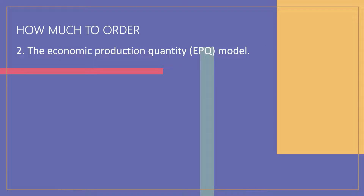Because the company makes the product itself, there are no ordering costs as such. Nonetheless, with every production run or batch there are setup costs — that is, the costs required to prepare the equipment for the job, such as cleaning, adjusting, and changing tools and fixtures. Setup costs are analogous to ordering costs because they are independent of the run size; they are treated in the formula in exactly the same way. The larger the run size, the fewer the number of runs needed, and hence the lower the annual setup cost.